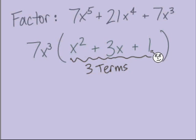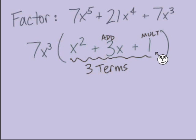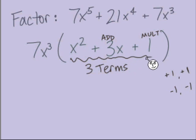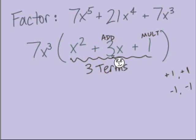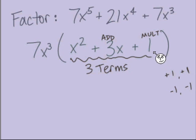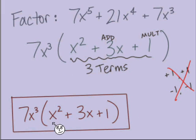With what's left in parentheses — 3 terms, no coefficient on the leading term — we look for a pair of numbers that multiplied together equal the constant term (positive 1) and added together equal the middle coefficient (positive 3). The only options are two positive 1s or two negative 1s; neither gives a sum of positive 3. So this trinomial cannot be factored further. Our final answer is 7x³(x² + 3x + 1), factored completely.